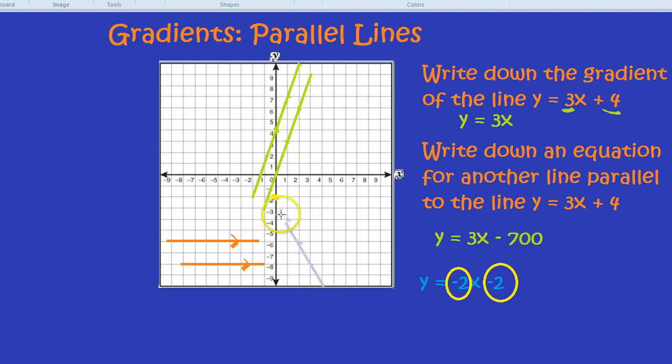Now, if I ask you the question, can you give me the equation of a line which is parallel to that, what would you say? Try to think of a line which is going to be parallel to this. To be parallel, you need to have the same gradient. So if you said y equals minus 2x plus anything or minus anything, you're right.